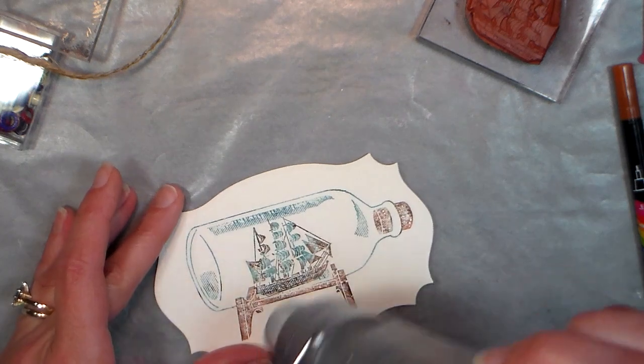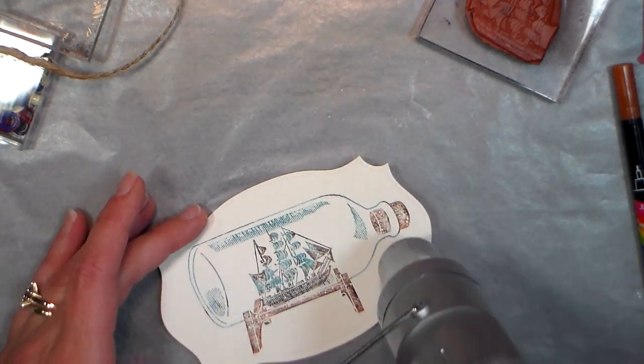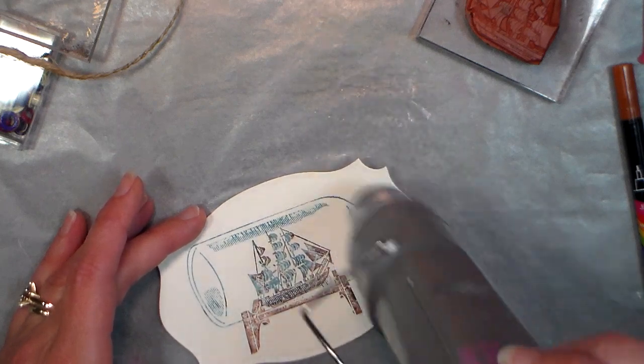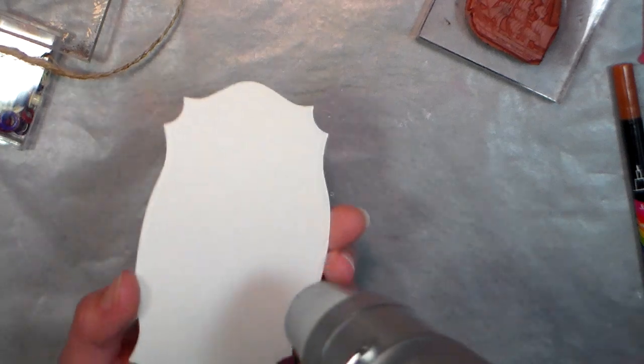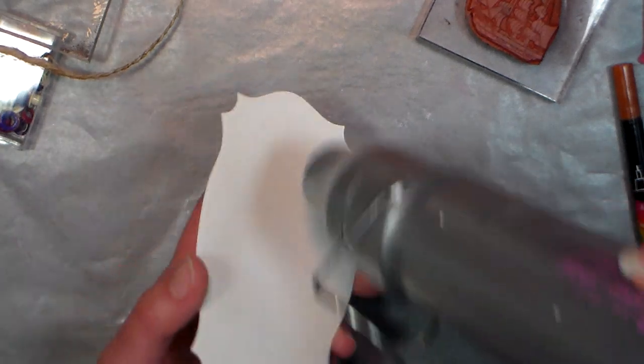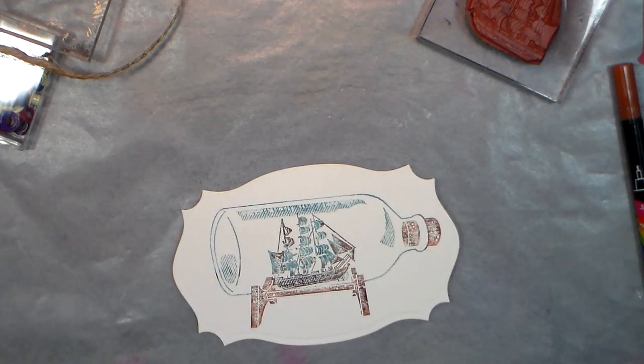Now I'm gonna heat set it. The reason I'm doing this is because these are water-based markers, I'll be able to go over with my alcohol markers and not run it, but I do want to make sure it's dry before I attempt it. I also heat it from the back because sometimes it curves, and that just kind of makes it curve back where it belongs. So a little tip for you there.